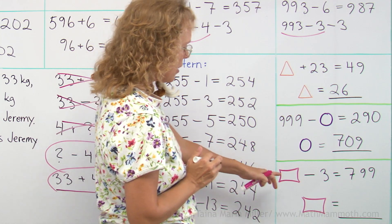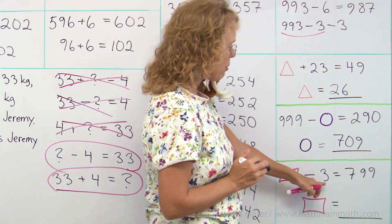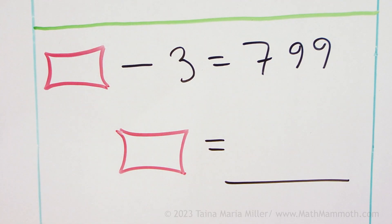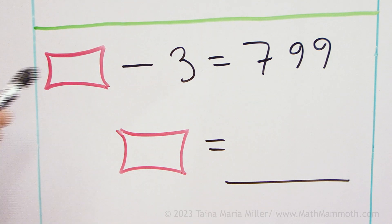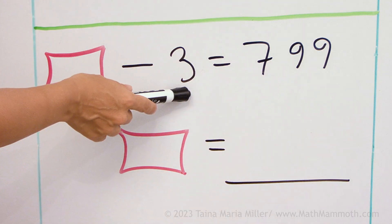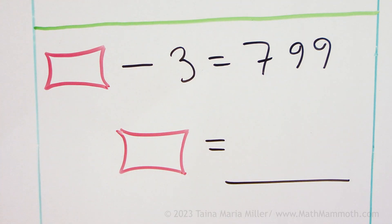Lastly, there's some number. We take away 3, and what is left is 799. Do you remember this kind? Here you have to work backwards. From something you take away 3, and this is left. So take what's left and add that back in, and you get how much you had originally.